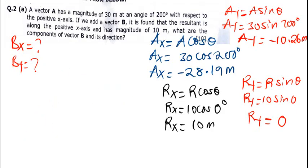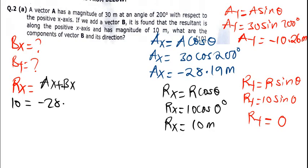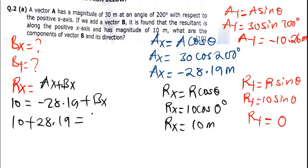Now I add the x components. The resultant Rx equals Ax plus Bx. So 10 = negative 28.19 + Bx. Shifting to the other side: Bx = 10 + 28.19.